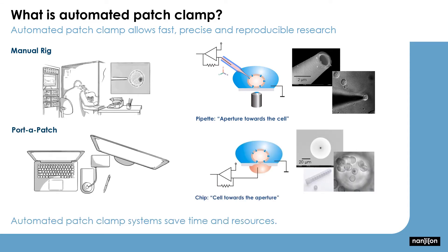With automated or planar patch clamp, instead of a pipette we have a planar glass layer with a small hole in it. The cells in suspension are pipetted under the top of the chip and suction is used to attract a cell to the hole, to make a good seal and to break into the whole cell configuration. The systems are easy to use and can be scaled up to record from multiple cells simultaneously.